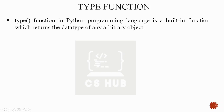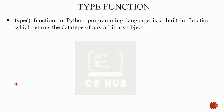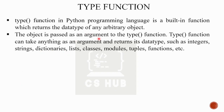The type() function is a built-in function that returns the data type of any arbitrary object. An object is passed as an argument to the type() function. It can take anything as an argument and returns its data type — such as integer, float, string, dictionary, list, class, module, tuple, or function.